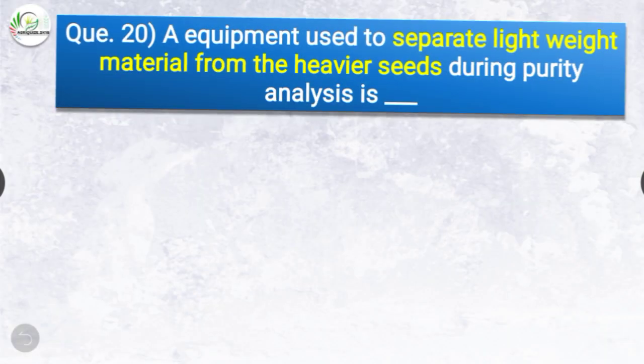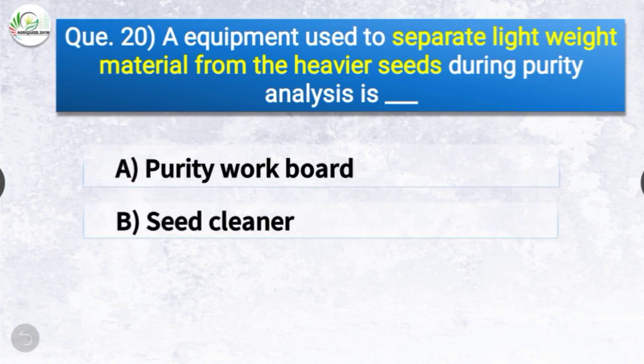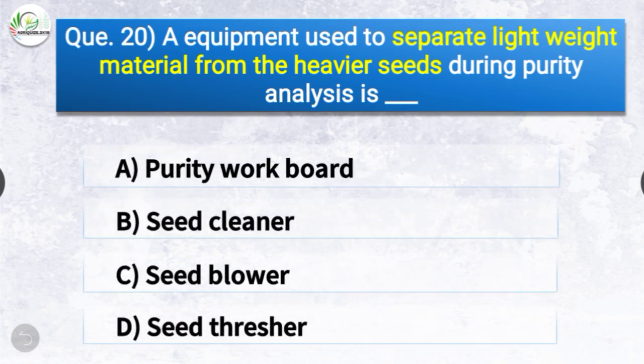Question number twenty: An equipment used to separate lightweight material from heavier seeds during purity analysis — the options are workboard, seed cleaner, seed blower, or seed thresher. The correct answer is option C — seed blower. Seed blower is the equipment used to separate lightweight material from heavier seeds during purity analysis.